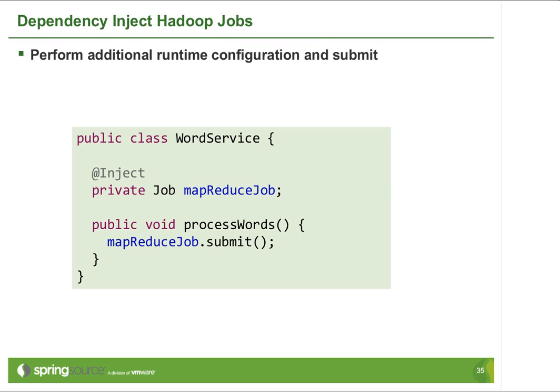Once you have a job defined with the namespace, you can inject it as you would any other Spring-managed object, change its runtime configuration, and of course — in the case of MapReduce — submit that job. This gives you the flexibility to have references to job objects declared through dependency injection, just as you would any other type of object when working with Spring.